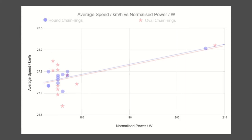Anecdotally, the scatter in the results seems to be related to the weather conditions — in particular the wind direction and speed — which obviously I had little control over, other than choosing the day and time to ride.